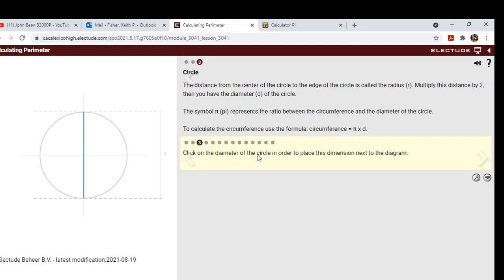Okay, click on the diameter of the circle in order to place the dimension next to the diagram. So here—oh sorry, I just click on it, I thought it was a click and drag. Oh well, let's move on. Just click on it and it slides out here so you can see the diameter to the side.